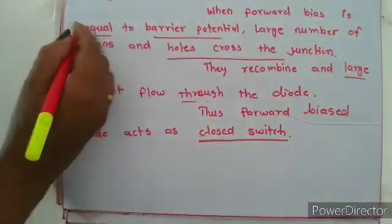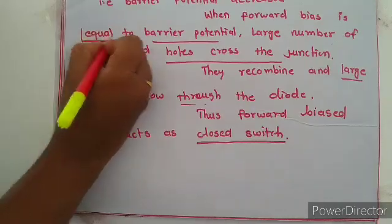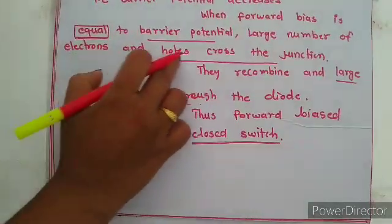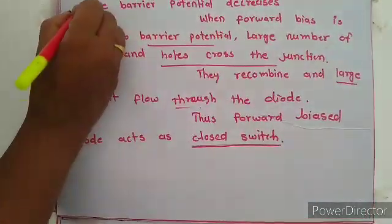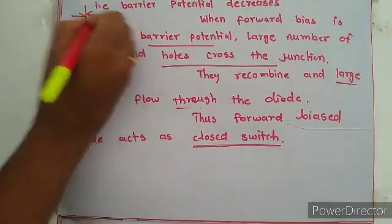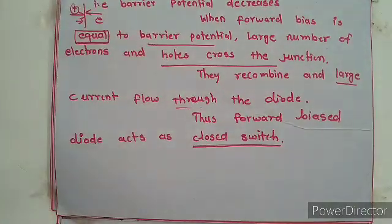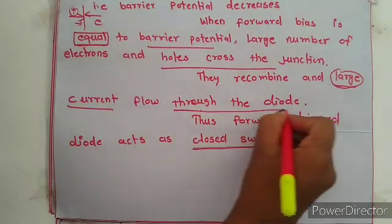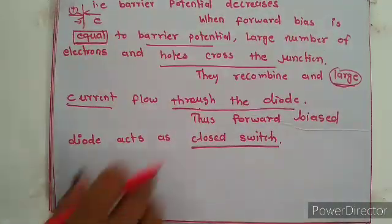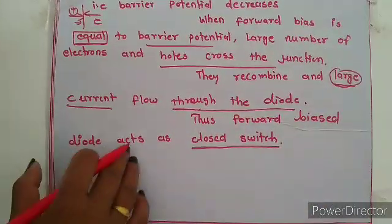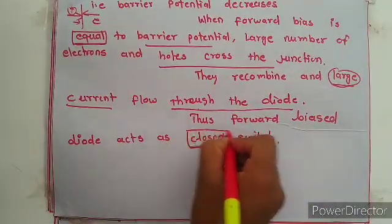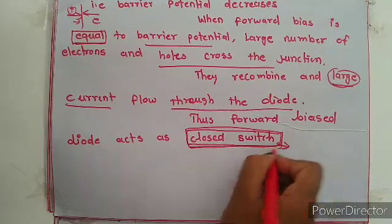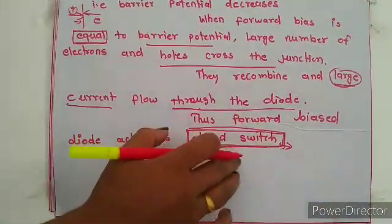When the forward bias voltage is equal to the barrier potential, a large number of electrons and holes cross the junction. Therefore, a large current flows through the circuit. Forward bias acts as a closed switch — you must remember how forward bias acts: it acts like a closed switch.